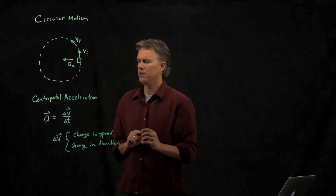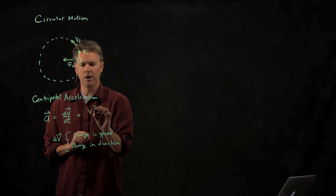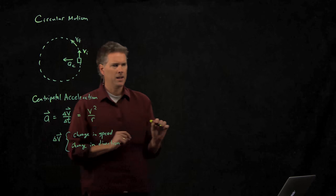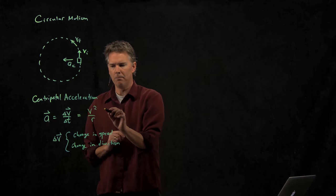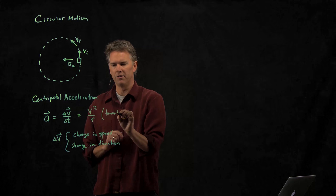So centripetal acceleration becomes v squared over r in magnitude, and it points towards the circle's center.